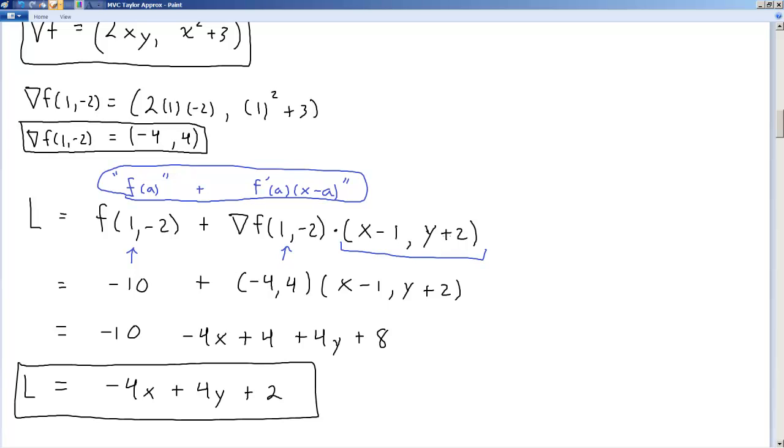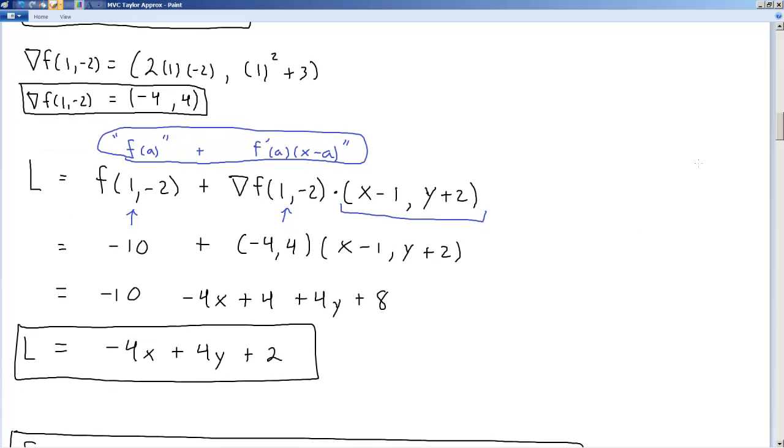You carry through with the algebraic steps. Take note that this is a dot product. So it's 4 times x minus 1 and then -4 times y plus 2. These are vectors that you're dotting. Then you do all the algebra and you end up with this as your tangent plane.